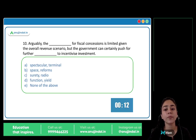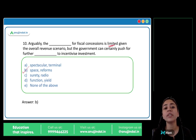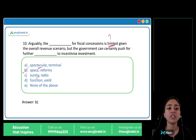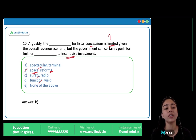This question has two blanks. Arguably, the space for fiscal concessions is limited given the overall revenue scenario. But the government can certainly push for further reforms to incentivize investment. The correct answer is option B: space and reforms. These are the two words that fit here.